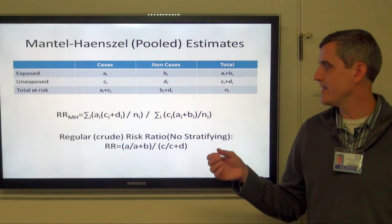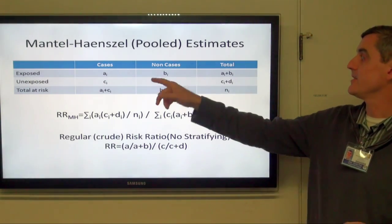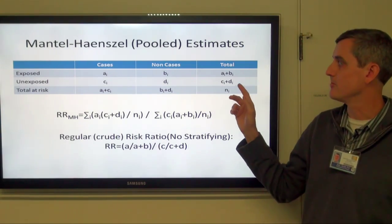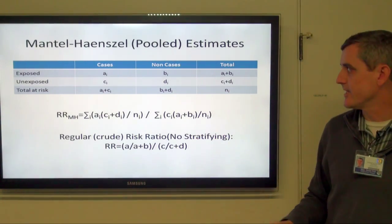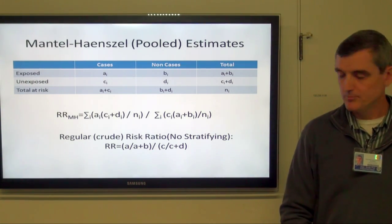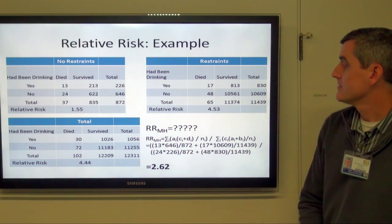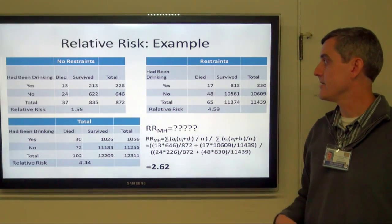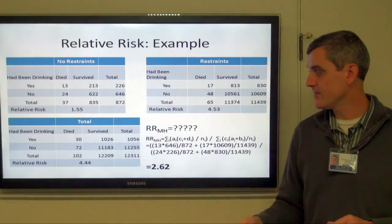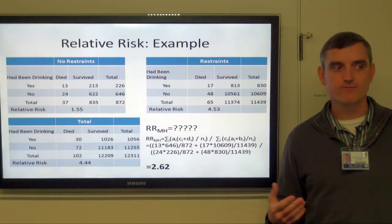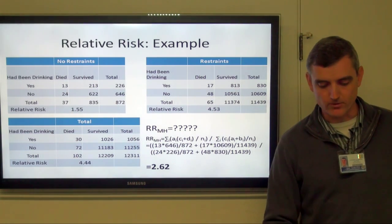This is the actual Mantel-Haenszel equation, related to the relative risk — the probability of being a case assuming you're exposed divided by the probability of being a case assuming you're not exposed, carried through multiple stratified tables. In our example, stratifying and calculating that pooled Mantel-Haenszel relative risk, we end up with a relative risk of 2.62 — quite a bit lower than the overall unadjusted relative risk. This is the adjusted relative risk for alcohol, adjusting for whether they were wearing a seatbelt.